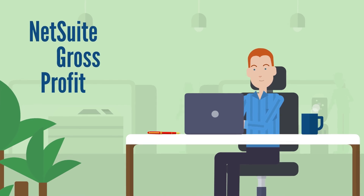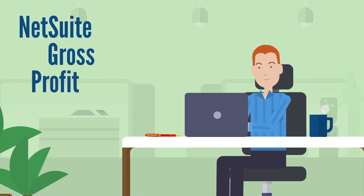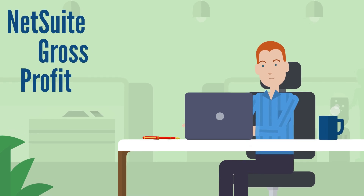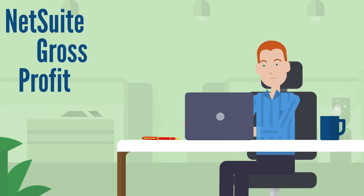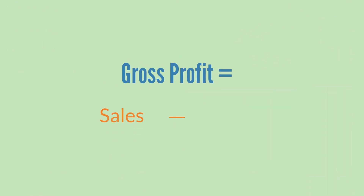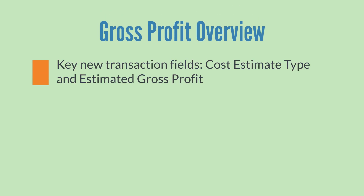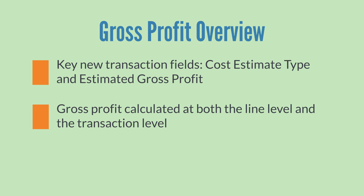The NetSuite Gross Profit feature allows you to estimate gross profit both for your transactions and for the individual line items on your transactions. Let's take a look at this feature and how it works in NetSuite. Gross profit is calculated as sales minus costs. When you enable the NetSuite Gross Profit feature, NetSuite adds some key fields such as cost estimate type and estimated gross profit to your standard transaction forms. These fields track and calculate gross profit, both at the line level and at the transaction level.